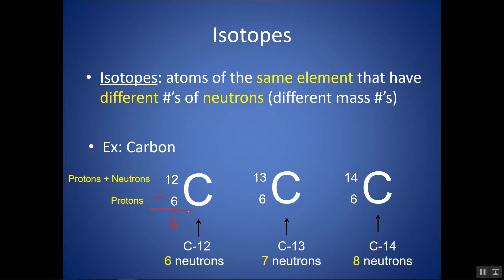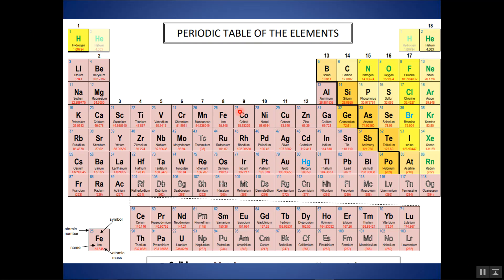The number of neutrons is not written anywhere in your actual symbol, but you can get it via subtraction. Also note that the mass number is not on the actual periodic table. The number you see on the periodic table with a decimal is called the atomic mass — that is not the mass number. Atomic mass is a weighted average of all the possible mass numbers for that particular element.